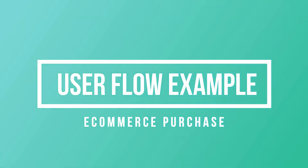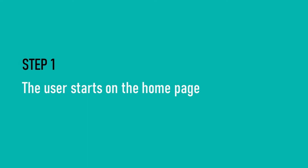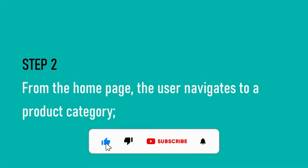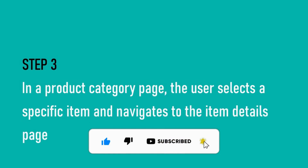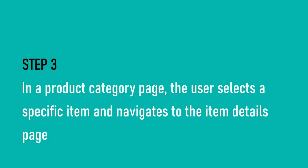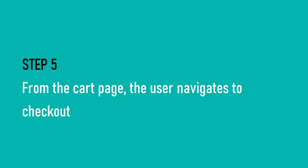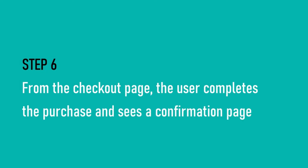So let's look at an example of a user flow. The first step: the user starts on the home page of your e-commerce website. The second step: the user navigates to a product category page. In the third step, the user selects a specific item and navigates to the item details page. In the fourth step, the user adds an item to the cart and navigates to the cart page. In the fifth step, the user navigates to the checkout page. And finally, from the checkout page, the user completes the purchase and sees a confirmation message.